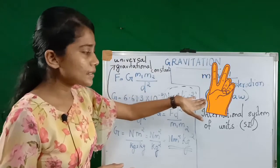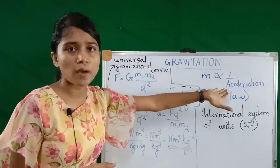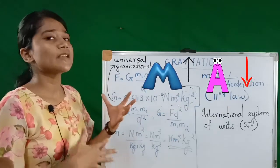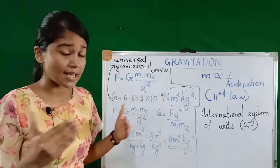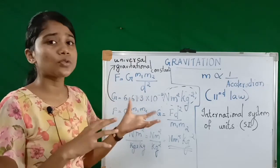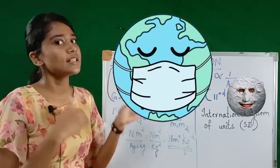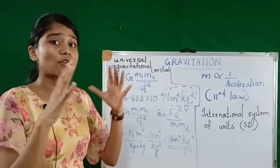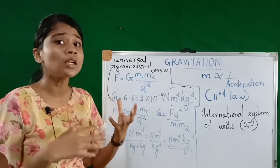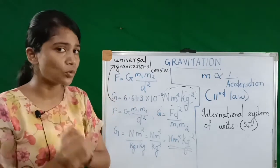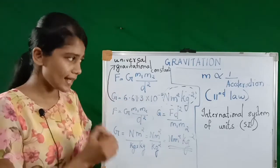We can understand this using Newton's second law of motion, where mass is inversely proportional to acceleration. If the mass is higher, the acceleration is less; if the mass is less, the acceleration is higher. When compared to earth, the moon has a smaller mass, so its acceleration is higher. But the mass of earth is high, so the acceleration is less. That is why we don't see the earth getting attracted towards the moon — its mass is higher, so the movement is less.